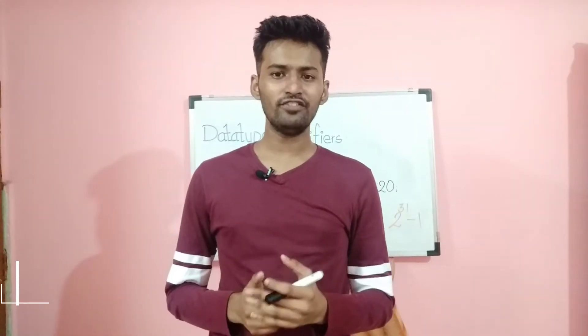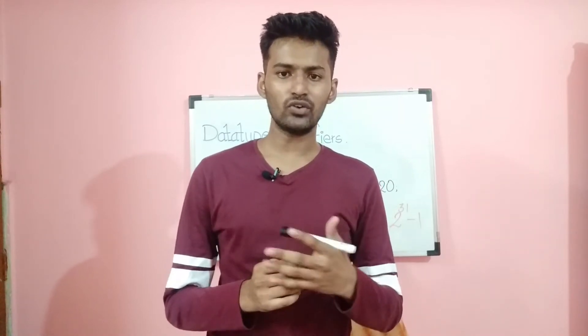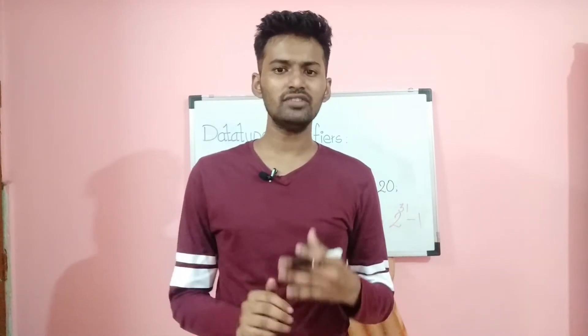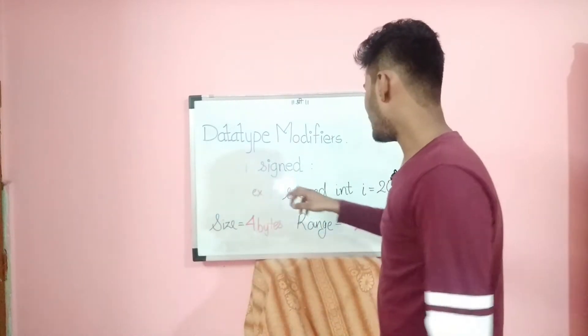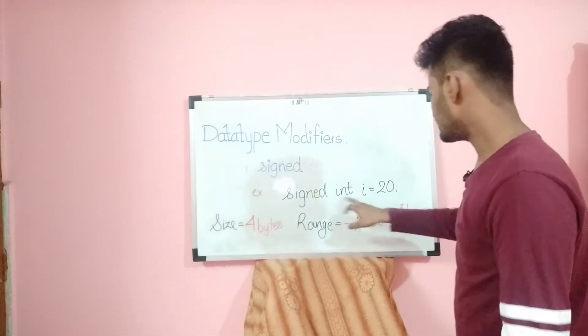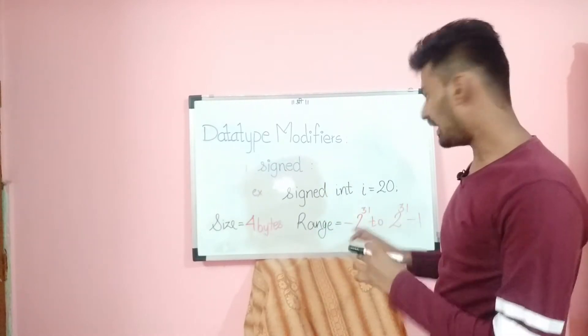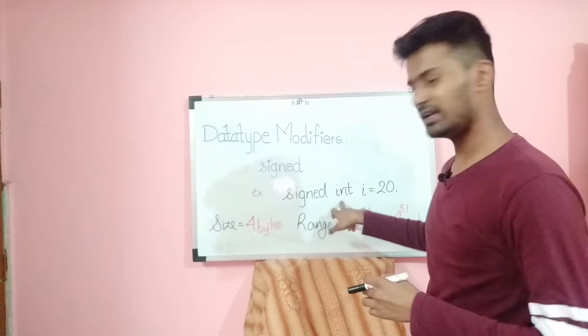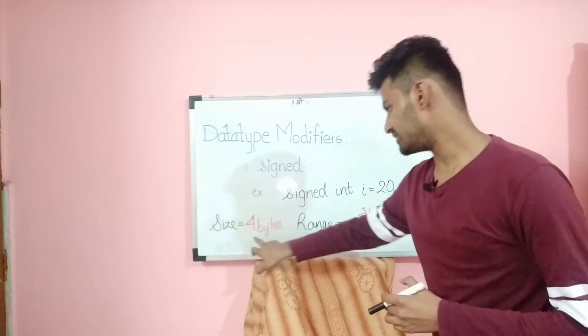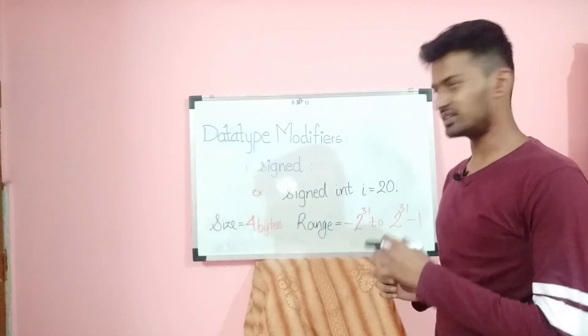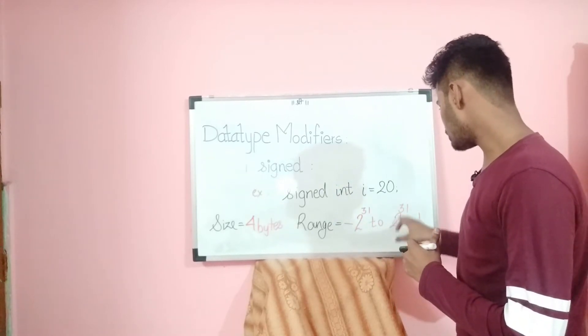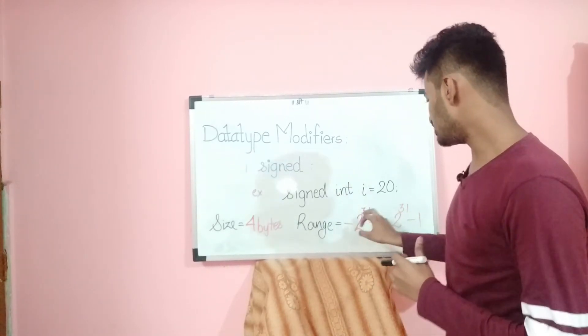The first data type modifier is signed. When you use signed in front of a variable, the range of the variable is from a negative maximum limit through zero to some positive maximum limit. The variable is mostly of type integer or character. For example, with a signed int variable i equal to 20, since i is of type integer, the size is 4 bytes and the range is from minus 2 raised to 31 to 2 raised to 31 minus 1.